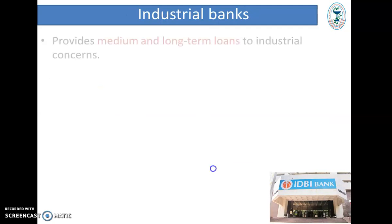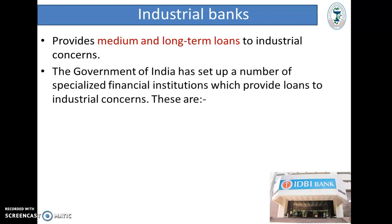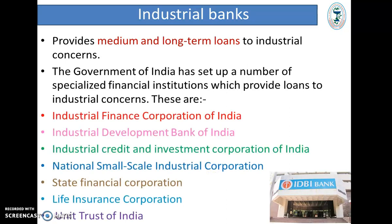Next, Industrial Banks. They provide medium and long-term loans to industrial concerns. The Government of India has set up a number of specialized financial institutions providing loans to industrial concerns. These include: Industrial Finance Corporation of India, Industrial Development Bank of India, Industrial Credit and Investment Corporation of India (ICICI Bank), National Small Scale Industrial Corporation, State Financial Corporation, Life Insurance Corporation (LIC), and Unit Trust of India (UTI Bank).